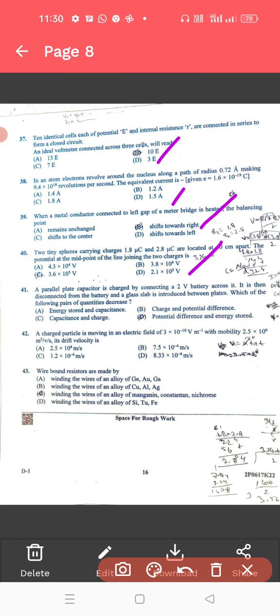For 41, a parallel plate capacitor. For this, correct answer is potential difference and energy stored. 42, a charged particle. For this, the correct answer is 7.5 into 10 power minus 4 meter per second.